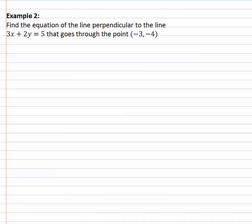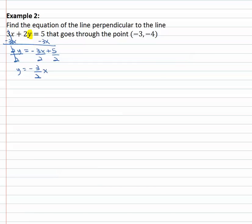This equation is not in slope-intercept form. To find the slope we need to isolate y. We subtract 3x from both sides, giving us 2y equals negative 3x plus 5. We prefer to put the x term first. Then we divide everything by 2, and we get y equals negative 3 halves x plus 5 halves. Now it's in slope-intercept form y equals mx plus b, so we can see the slope is negative 3 halves.